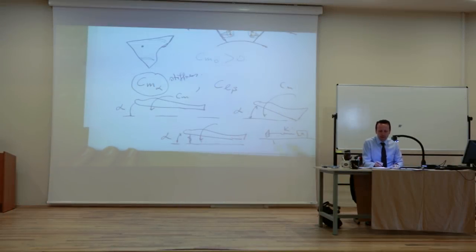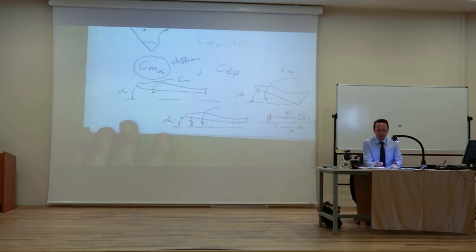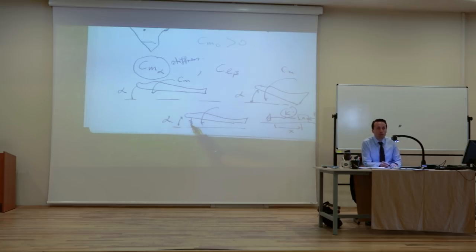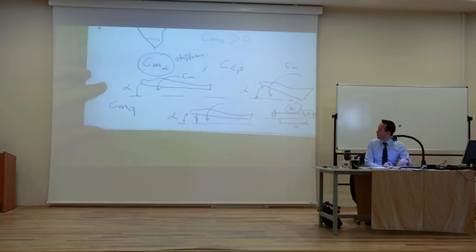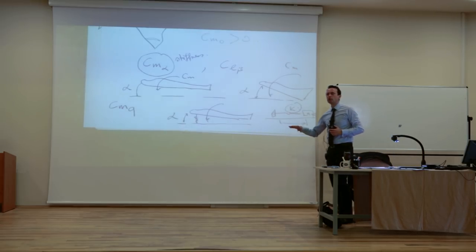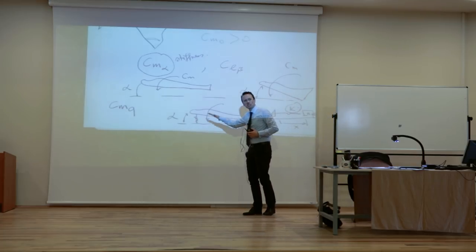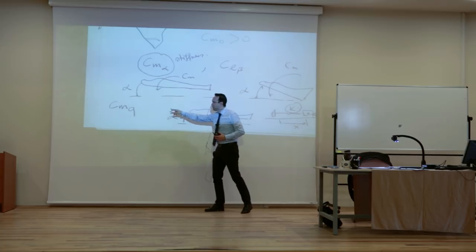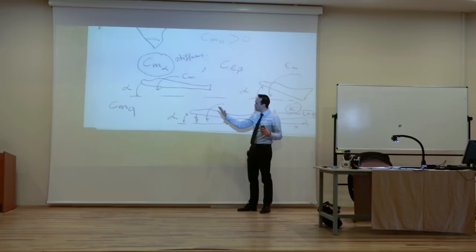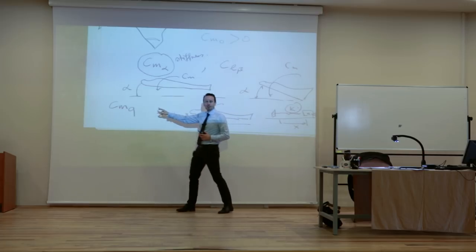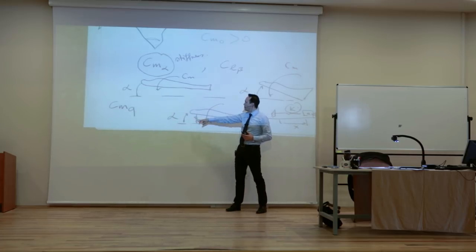It's like a spring. You have a mass, a spring constant k - the bigger the displacement x, the bigger the force, and that's a function of k. K is the stiffness. It's about the same thing: the more alpha, the more moment. So it's kind of the stiffness of the system. We also talked about CL_beta - the more beta you have, the more moment, a similar relationship.